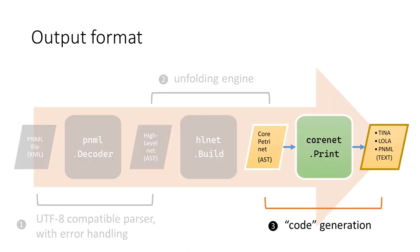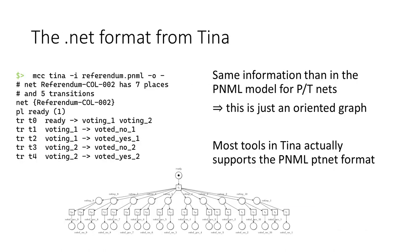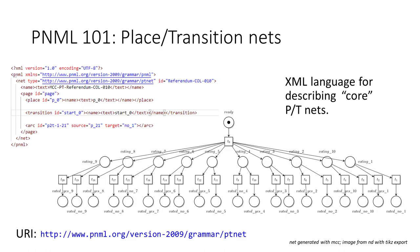The third library in our transformation pipeline is package-core-net, which contains code for describing a graph-like data structure representing a place-transition net. This package contains functions for marshaling a net into a file. A tool developer wishing to adopt or enrich MCC only needs to provide a similar write function. For instance, during the writing of this paper, I implemented a PNML subcommand added in the last release of the tool — only 100 lines of code were enough to add the ability to output PNML files.